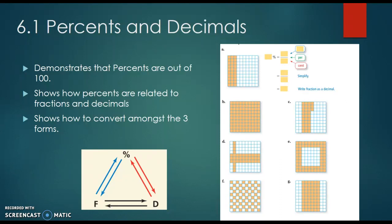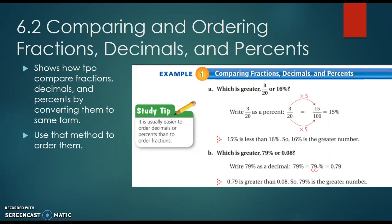From there, the next couple days of lessons are about comparing and ordering fractions, decimals, and percents. Once you know how to convert between the two, they show how you would change the different fractions, decimals, or percents into the same form, and then you'd be able to compare more easily, and then the same with ordering. They gave a little tip there that it's easier to order decimals or percents than to order fractions. That's just a study tip they gave as part of the book.